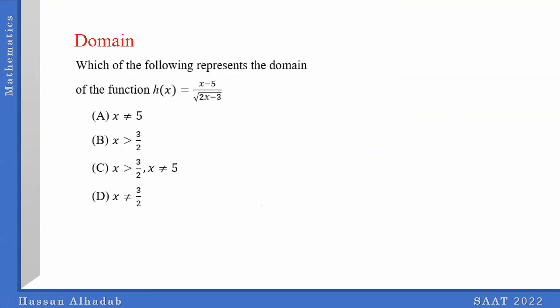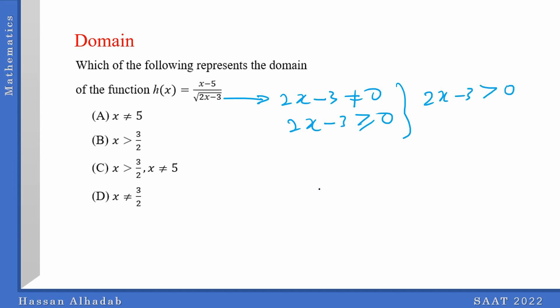There is one for you to practice. What do you think? It's B. Why? Because the 2x plus 3 is in the denominator, so it cannot be 0. And what's underneath the square root has to be greater than or equal to 0. But since it cannot be 0 and it must be greater than or equal to 0, we combine these to get 2x minus 3 is greater than 0. So x is greater than 3 over 2. The answer is B.